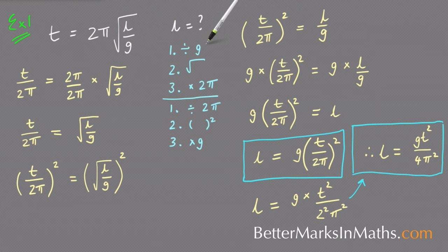A little way of figuring out the order, if that's what you're having trouble with, is to do this. What's the first thing that's being done to the l? It's being divided by g. The next thing that's being done is it's being square rooted. So that's step two. And then the last thing that's happening is it's being times by 2π.